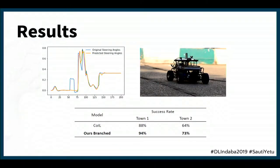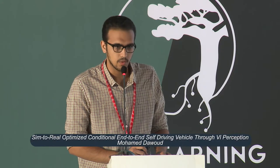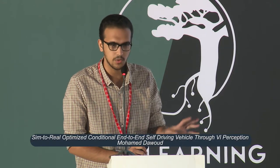These are the results we reached. This graph shows how accurately our model could predict the steering angles, and on the right is our physical prototype that we built at the end of the project. The table shows the results we reached. There is another paper published on a similar topic called conditional imitation learning, which achieved 88% on the success rate metric. Ours was 94%, and we are planning to publish a paper with our results soon.